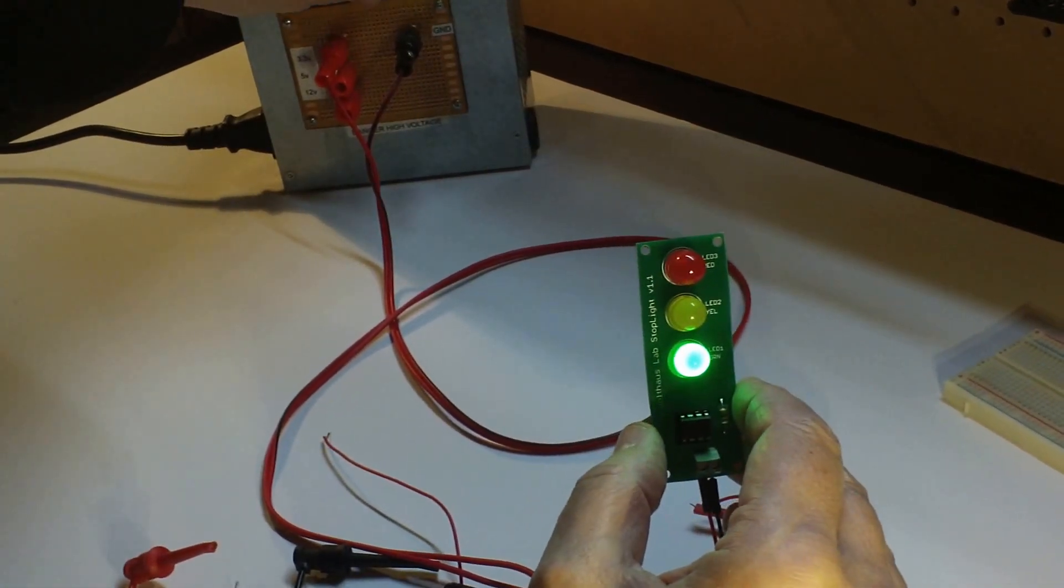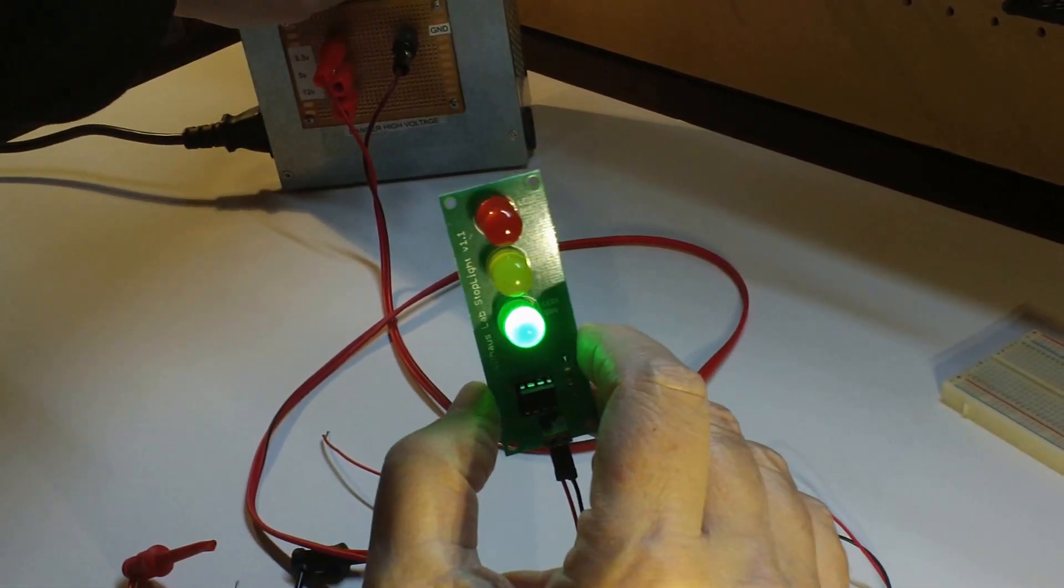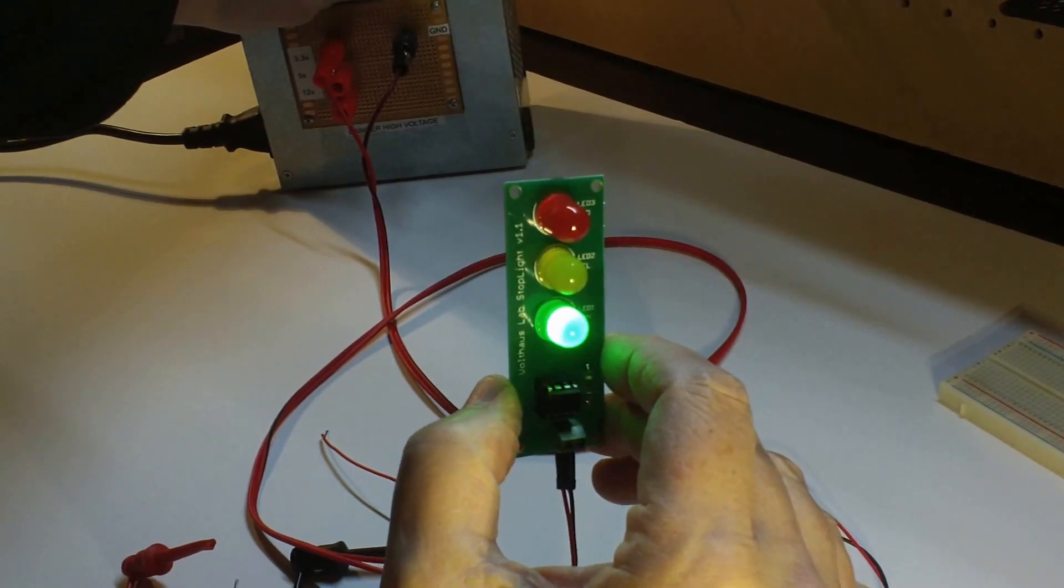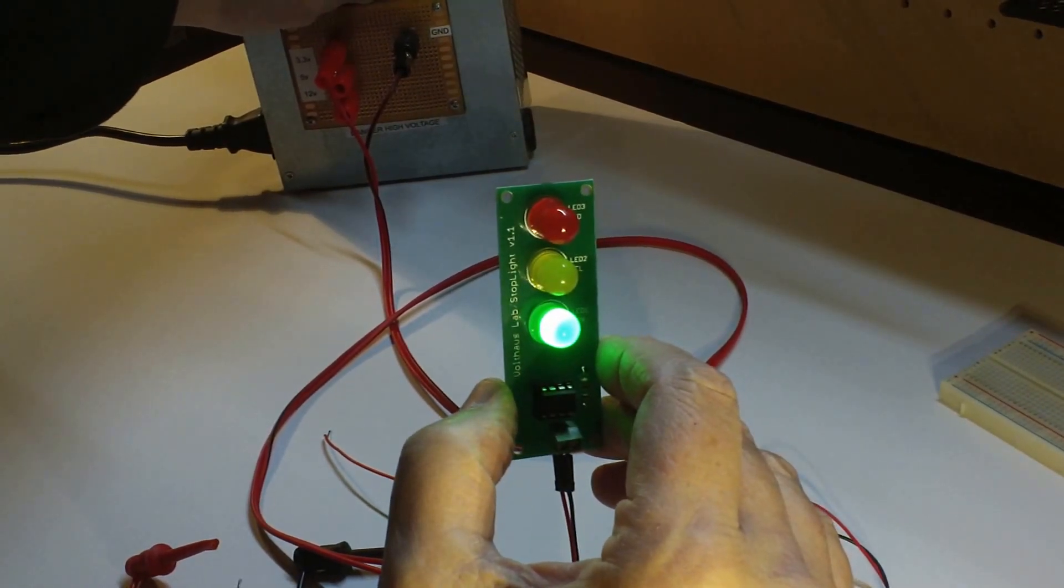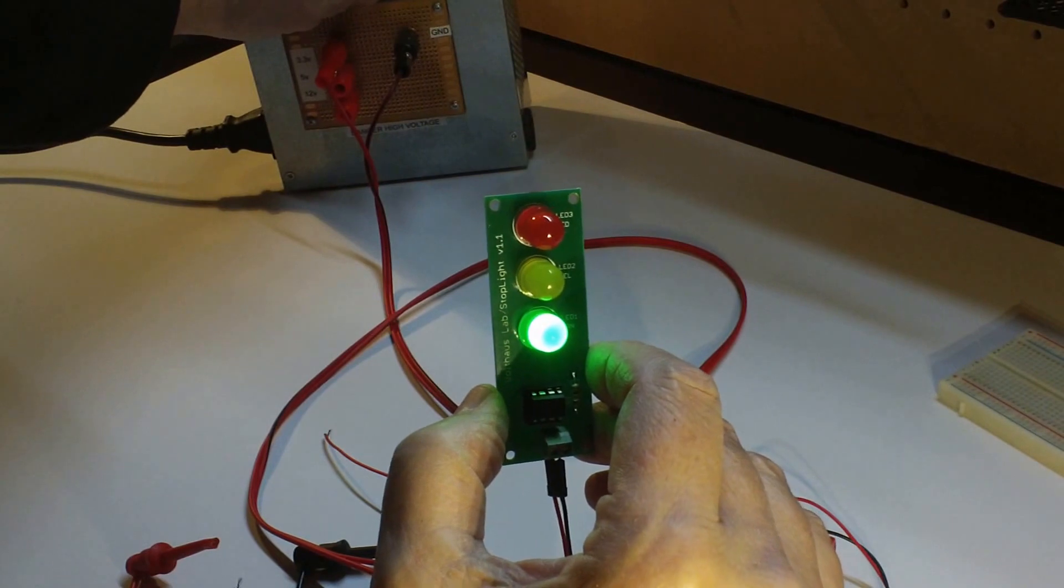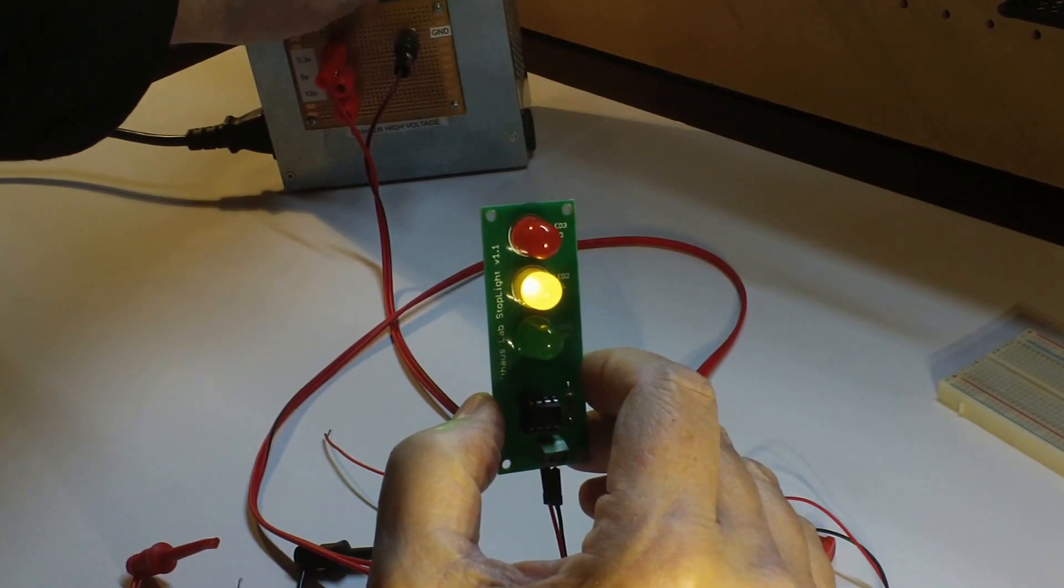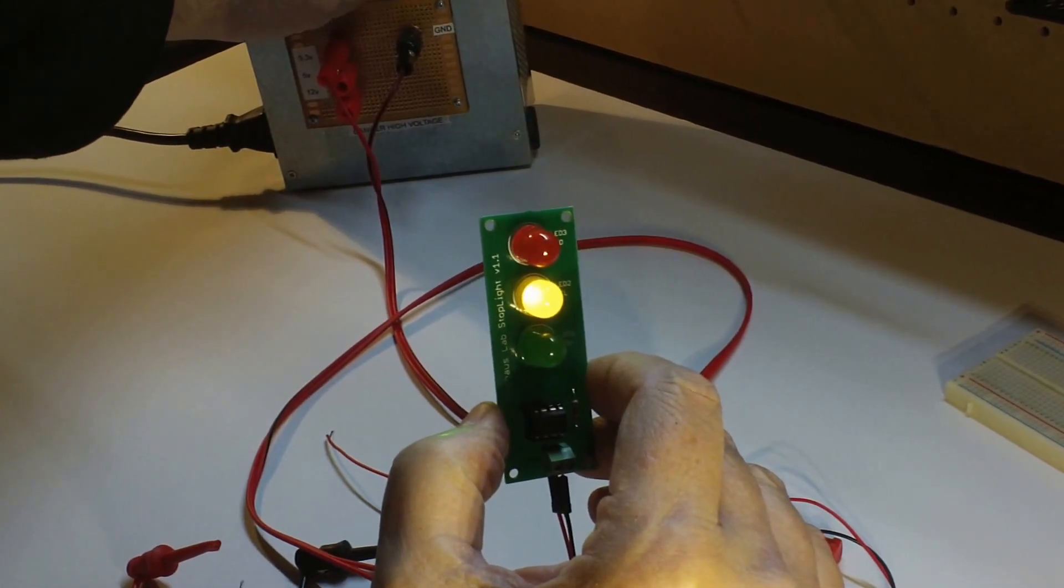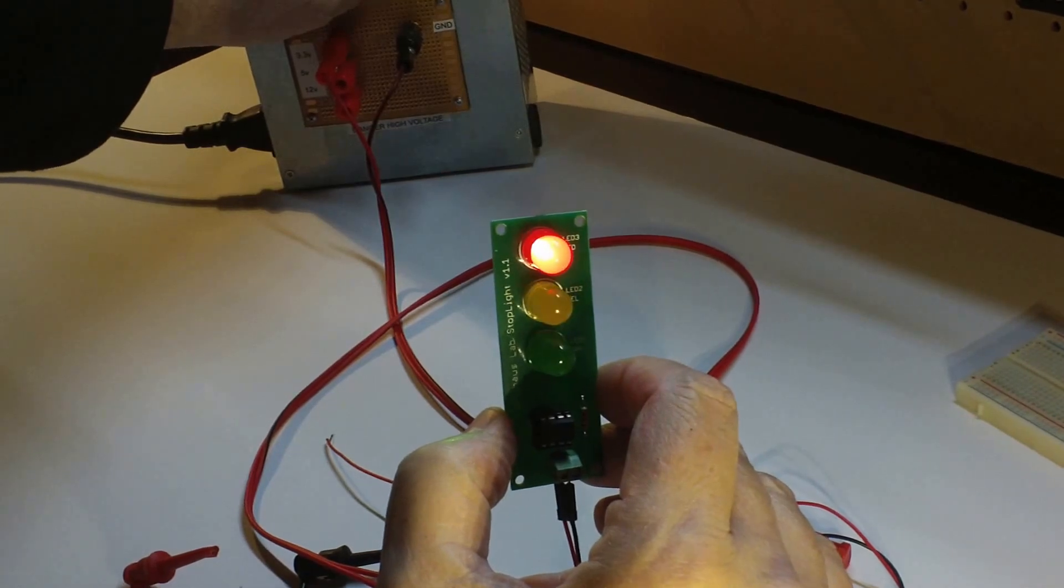So there we go, a variety of ways to power the ATtiny, the Atmel ATtiny85 automatic stoplight kit from Volthouse Electronics. Thank you for watching.